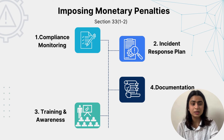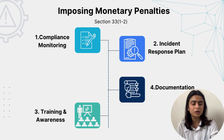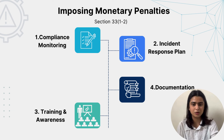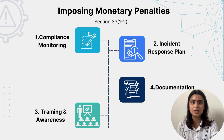Third, Training and Awareness. We have to regularly conduct training programs to educate employees on data protection obligations and non-compliance consequences. For example, Google provides ongoing privacy and security training for its employees to ensure they are aware of their responsibilities under data protection laws. Companies need to foster a culture of compliance, reducing the likelihood of breaches and associated penalties.